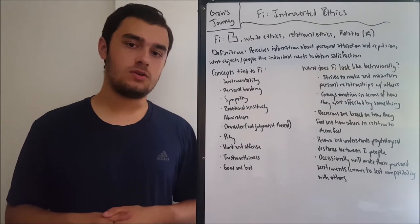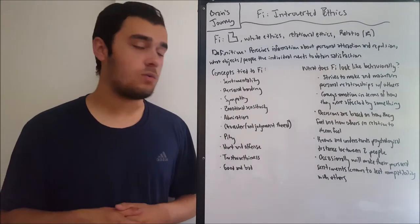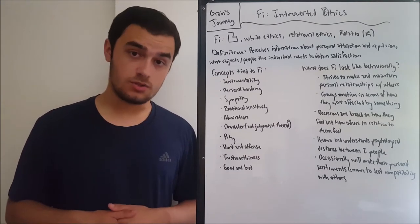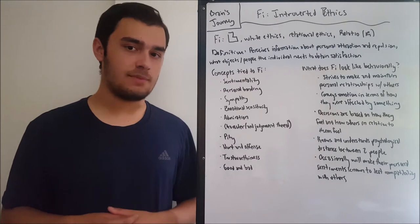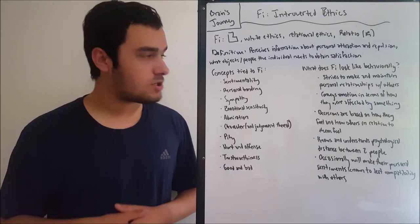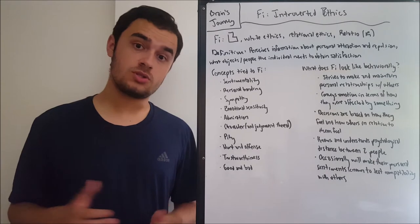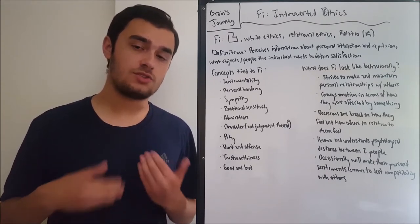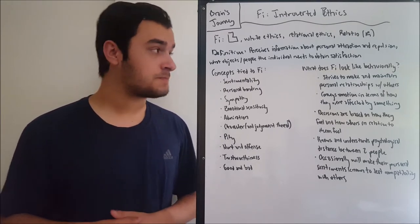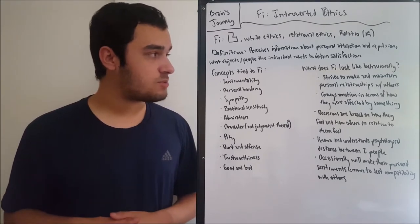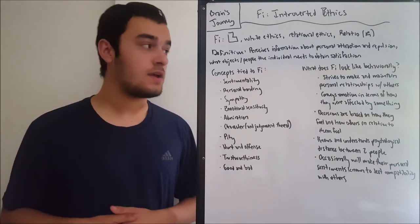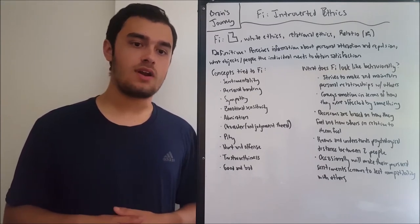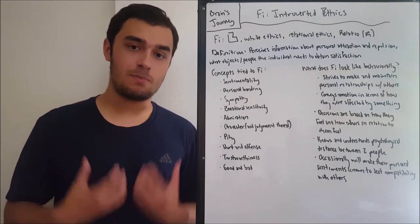You'll also see it called by the Latin name relatio, abbreviated to R. So the definition — what are we seeing with this element? FI perceives information about personal attraction and repulsion, kind of the magnetic, almost imperceivable distances between two objects in terms of the subjective opinion of the person, and also what objects and people the individual needs to obtain its satisfaction — emotional, intellectual, whatever — as long as it has some kind of sentimental basis in the person.